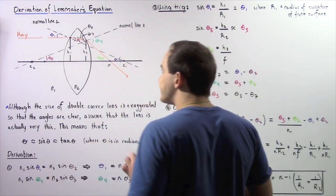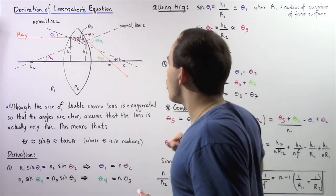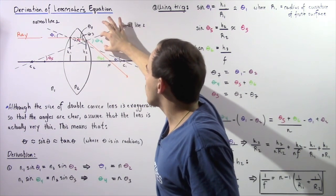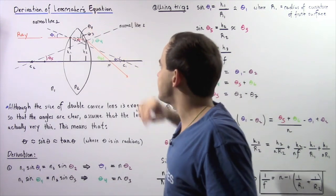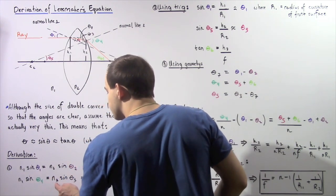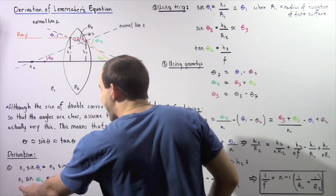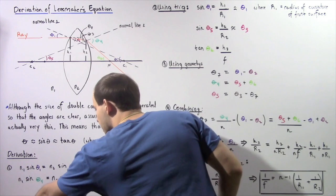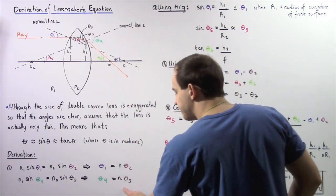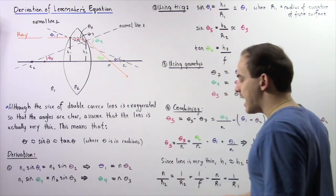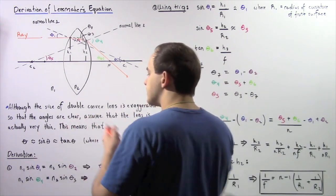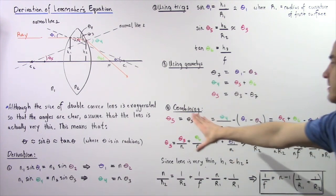Applying Snell's Law at the back surface, where θ4 is the angle of incidence and θ3 is the angle of refraction going from lens to air: N1·sin(θ1) = N2·sin(θ2) becomes, with N1 = 1 and N2 = N and the small angle approximation, θ4 = N·θ3. These two relationships — θ1 = N·θ2 and θ4 = N·θ3 — will be important in Step 4.